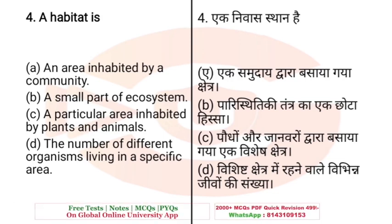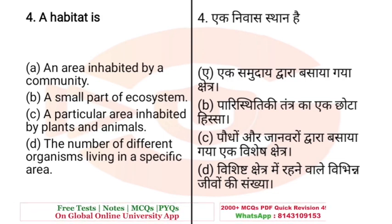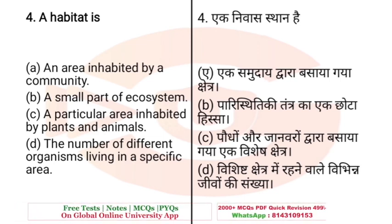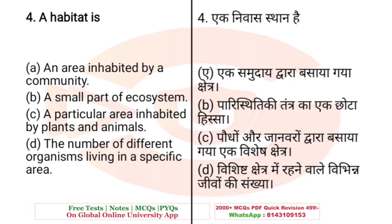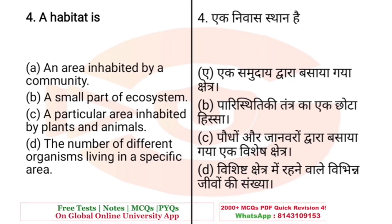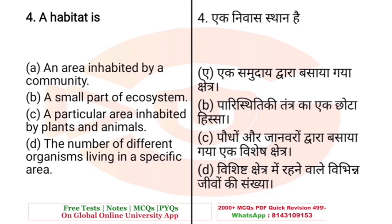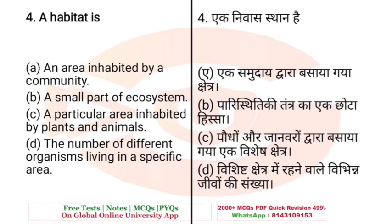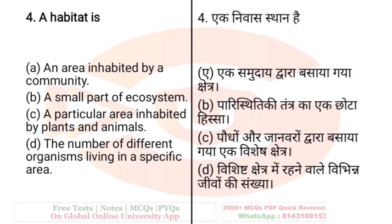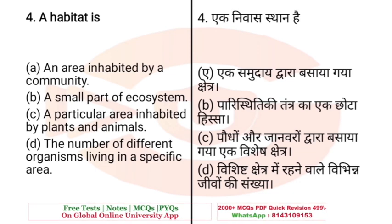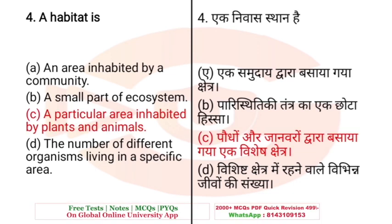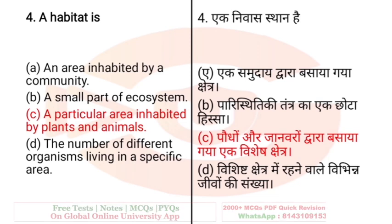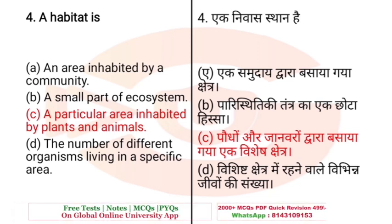Question: A habitat is — A. An area inhabited by a community, B. A small part of an ecosystem, C. A particular area inhabited by plants and animals, D. The number of different organisms living in a specific area. The right answer is C — a particular area inhabited by plants and animals is called a habitat.